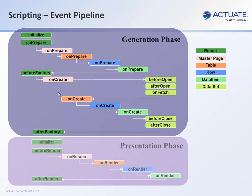Let's now talk about the presentation phase. At the presentation phase, the first event that gets called is the initialize event. Then the before render of the report, which will call the onRender of the master page, which will, in turn, call the onRender of the table, which will, in turn, call the onRender of the row, and then it will call the onRender for each data item within that row, and then, lastly, it will call the afterRender of the presentation phase.